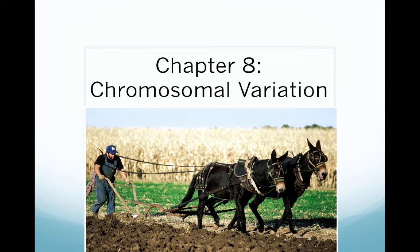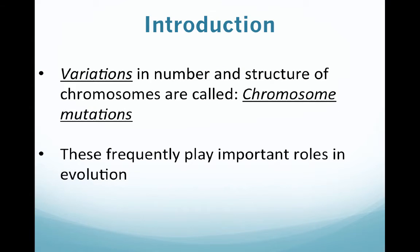Hi folks, now that we've been through chapters 1 and 2 and have a good review and foundation of genetics and some of the terminology, we're going to head right into new material. We're going to start with chapter 8, which is all about chromosomal variation. Variations are going to exist in cells, and those chromosomes are actually going to be in a mutated state if a variation does exist.